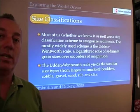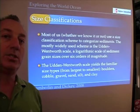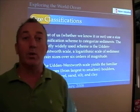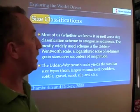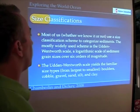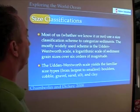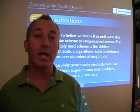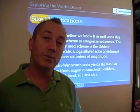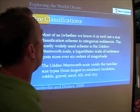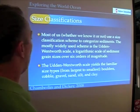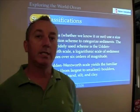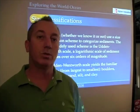Another classification scheme is size classification. Whether we know it or not, most of us use a size classification scheme to categorize sediment. The most widely used scheme is called the Udden-Wentworth scale — you're familiar with it even though you didn't know it was called that. It's a logarithmic scale of sediment sizes, and it spans six orders of magnitude.